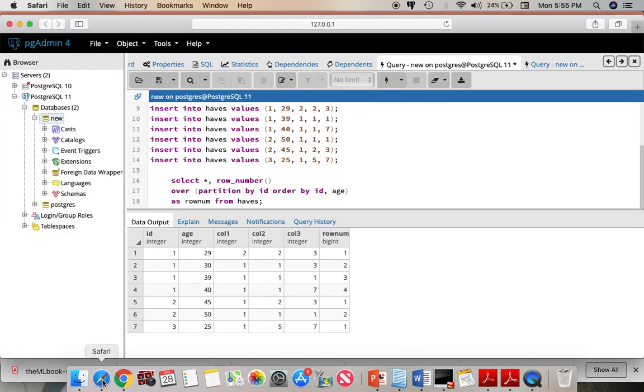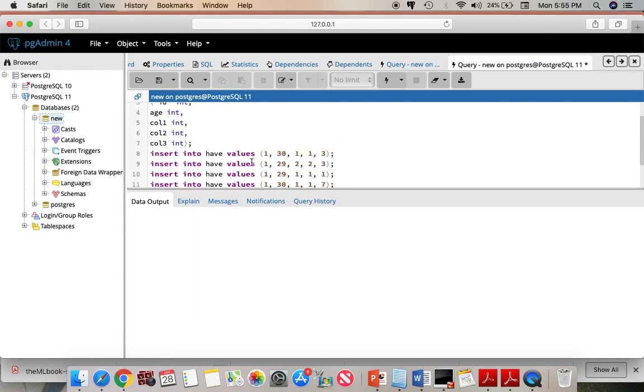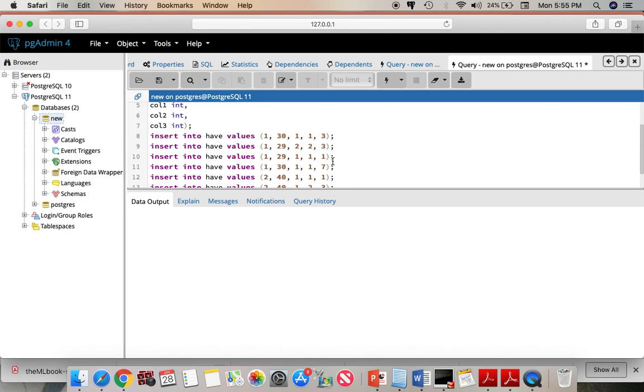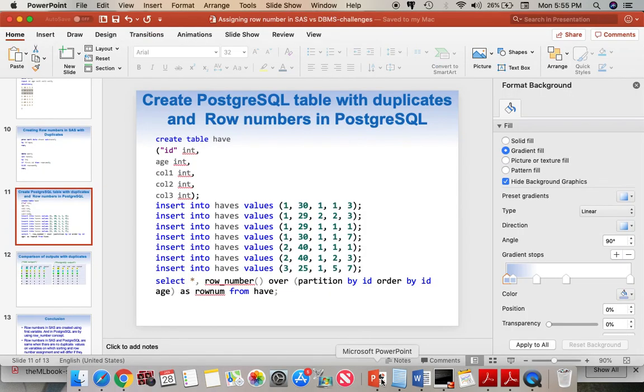So let us see whether we get the same results with the same rows in postgres. In the postgres here is the data where I am again taking duplicates and running this code. If you see the rows are not exactly same even though numbering has some similarity. To understand it better let me copy paste this value on a powerpoint.